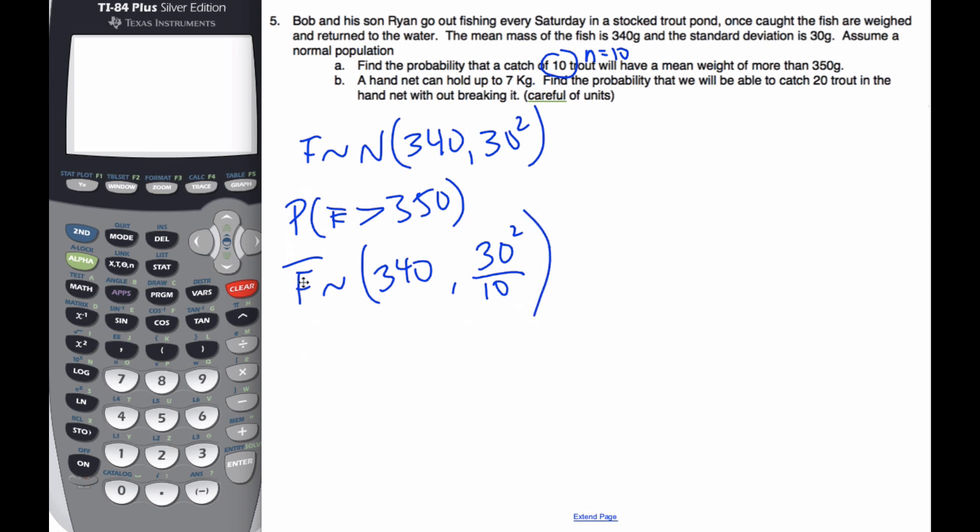And so if I want to find this probability, if I think about my normal curve, here is 340, here is 350, looking for that area. So I plug that into my calculator with these values, I end up getting the value of 0.456.